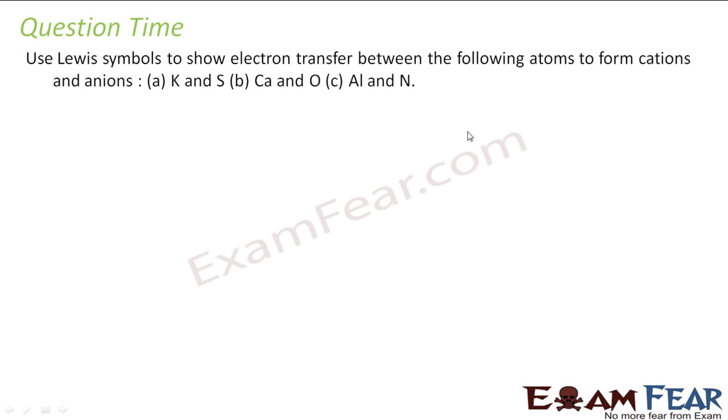So we have to use the Lewis symbols to show the transfer of electrons between the following cations and atoms. So let us take the first one potassium and sulfur. Potassium has one valence electron and sulfur has six. So potassium will be eager to give one electron to sulfur to maintain the stable configuration. And sulfur will be eager to take one electron. So in this case, I will have potassium as plus charge, sulfur will get two negative charge because sulfur will take two electrons from two potassium. This will be the structure.